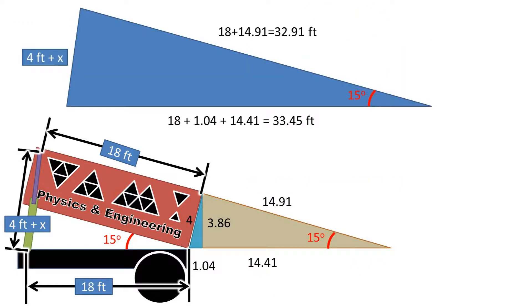Next, we can add up the sides we found to form a larger triangle. Doing so, we are left with a side length of 32.91 feet and 33.45 feet.